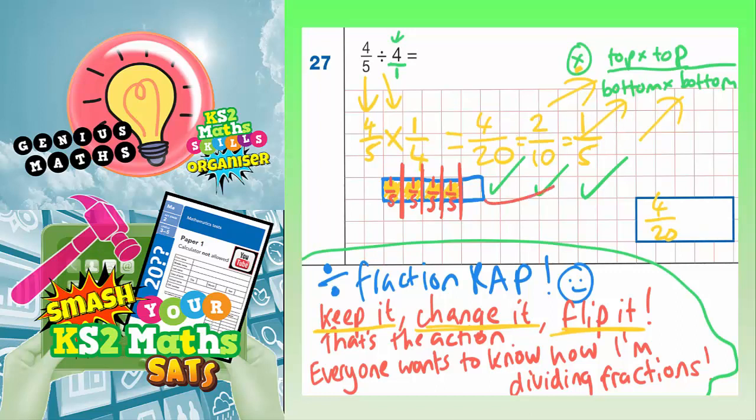And that is what we've got here, 1 fifth, which we've already said is equivalent to the 4 twentieths. So that's another way you could do it.